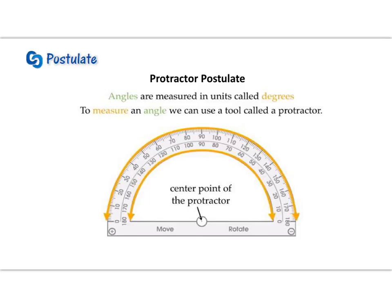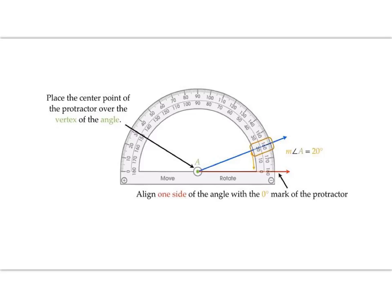We'll be using our protractor in this lesson. Getting familiar with our protractor postulate: angles are measured in units called degrees. The protractor has an inner scale and an outer scale that go in opposite directions. Make sure you have one in class and we'll practice. To use a protractor, line up one side of your ray along the edge, and the center at the vertex. If the angle opens towards the right, you're using the inner scale — for example, measure of angle A equals 20 degrees. This notation is important: the little M in front of the angle symbol, and don't forget your degree symbol.